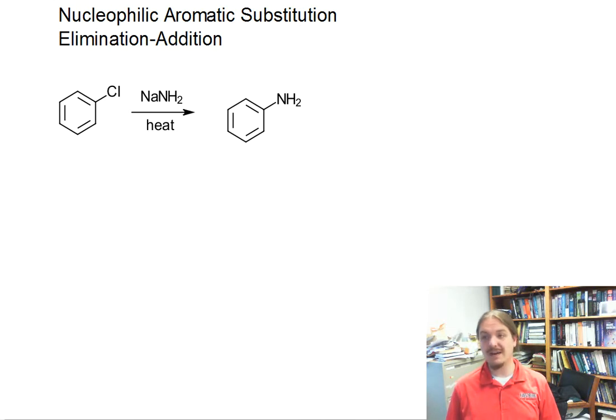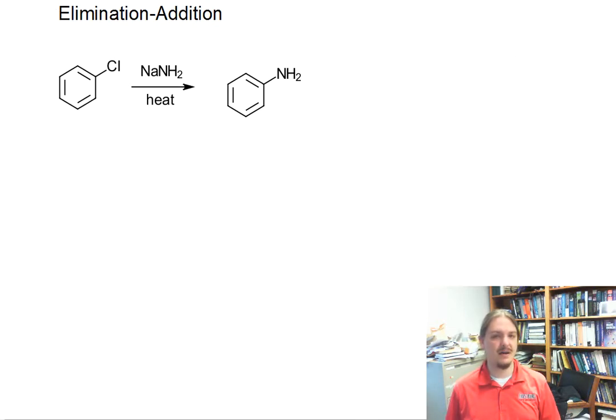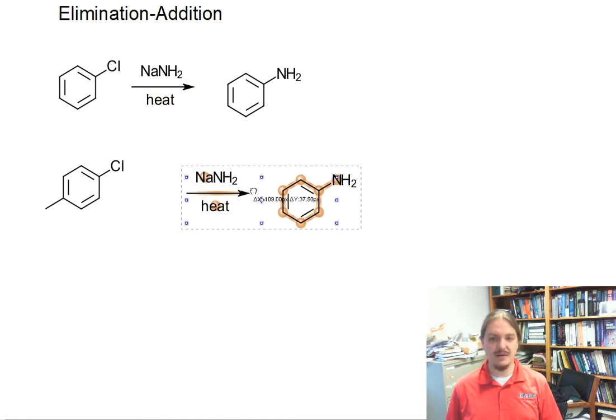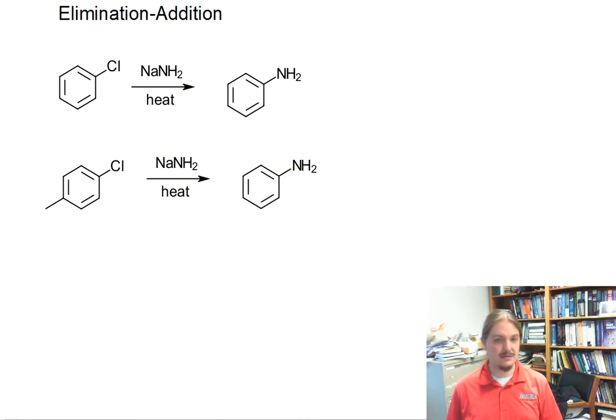You might want to propose a mechanism like the addition elimination or SNAr mechanism, except that mechanism is inconsistent with the following observation, which is if I put another substituent on the ring, I get the product that I expect with the nucleophile replacing the leaving group, but I also get a different isomer with the nucleophile at a different spot.